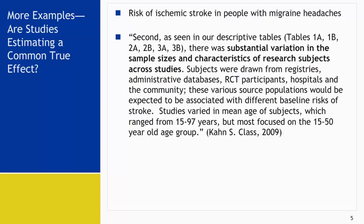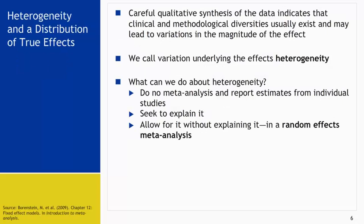The authors are concerned about the age distribution across studies. The younger population group, based on our knowledge, has lower risk of stroke compared to the older population. That's why the association between migraine headache and stroke might be different from study to study. Careful qualitative synthesis of the data usually indicates that there are clinical and methodological diversities, and they may lead to variations in the magnitude of the effect size. We call this variation underlying the effects heterogeneity.